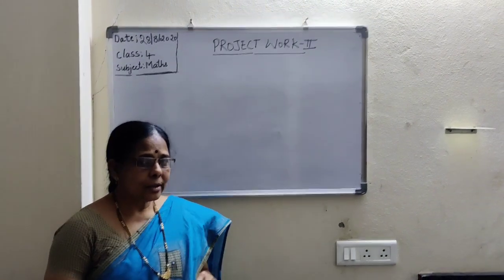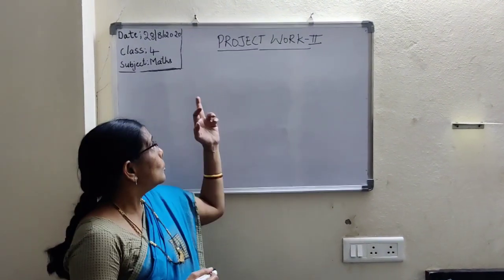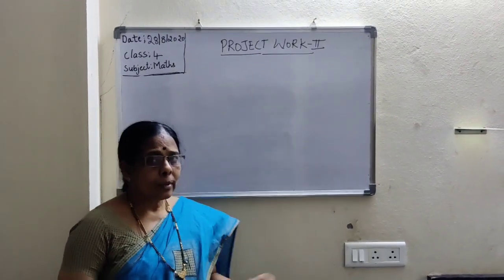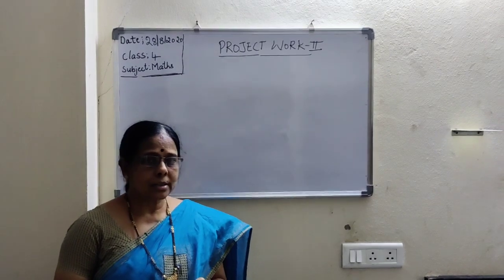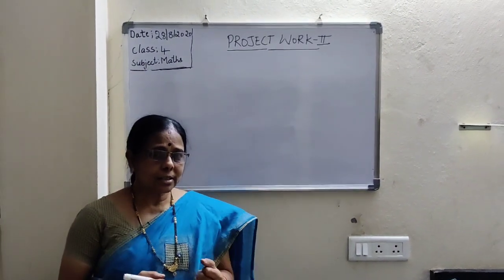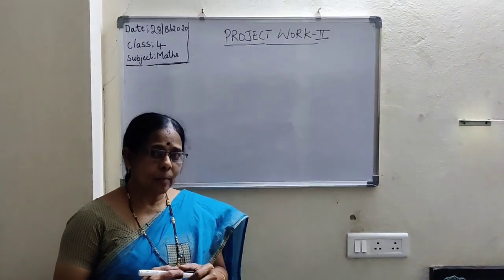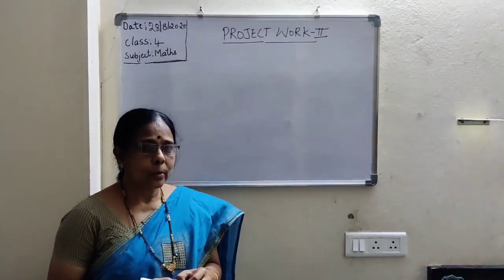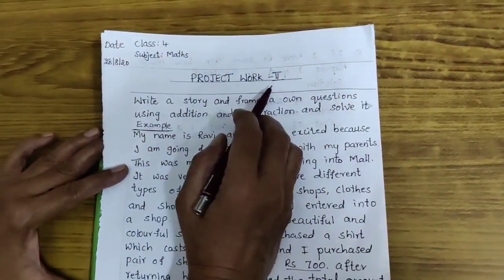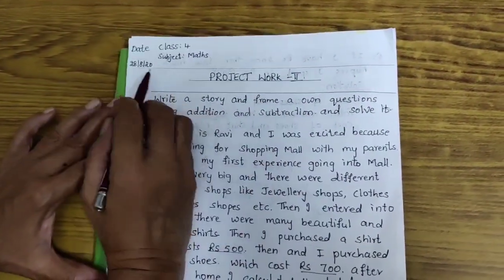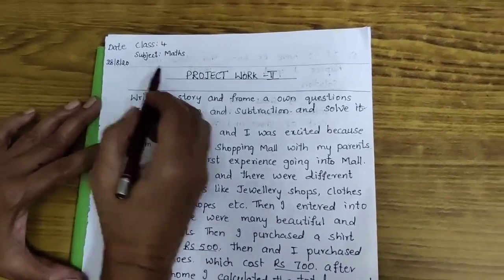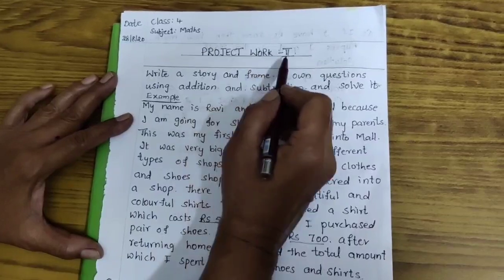Now I will take, we will come into project work. That is project work 2 and afterwards I will take a small test children. The project work and test, slip test will write in same activity book children. First write date children 28-8-20, write heading project work 2.